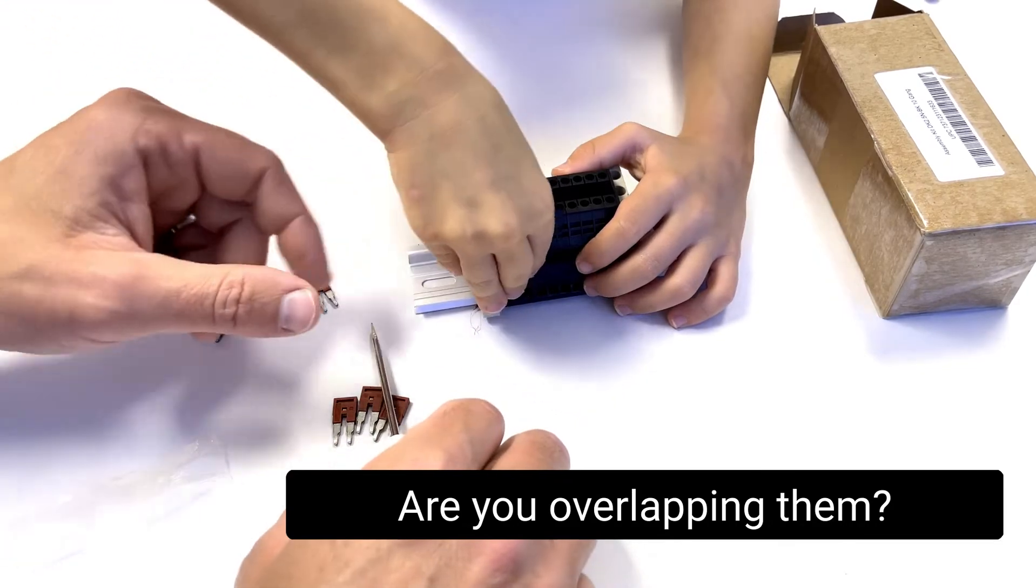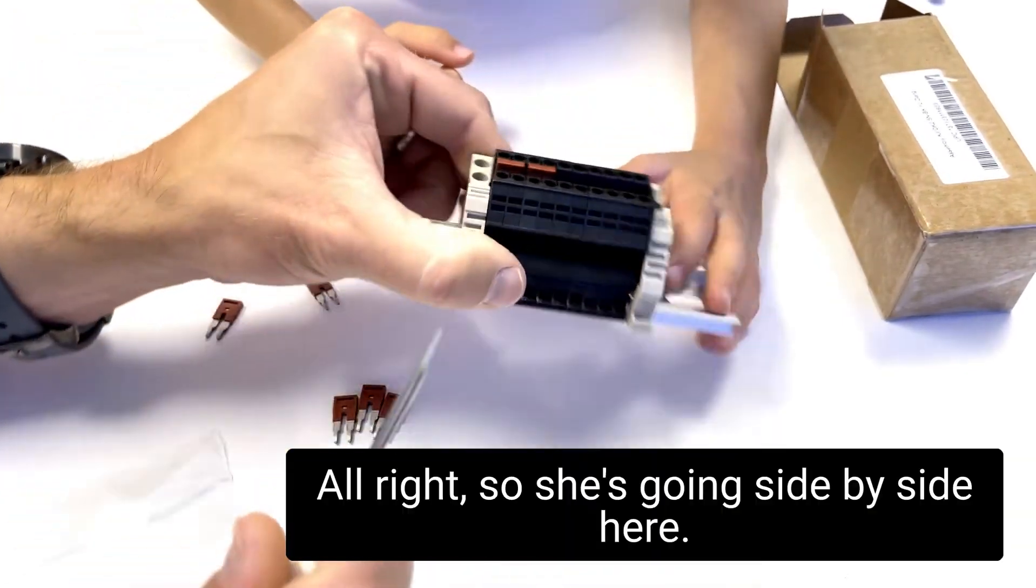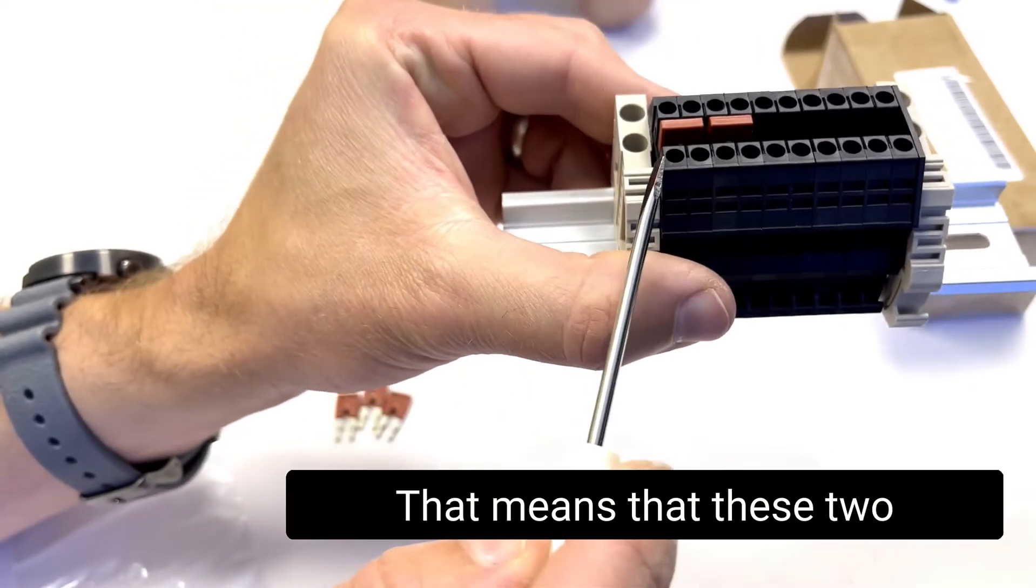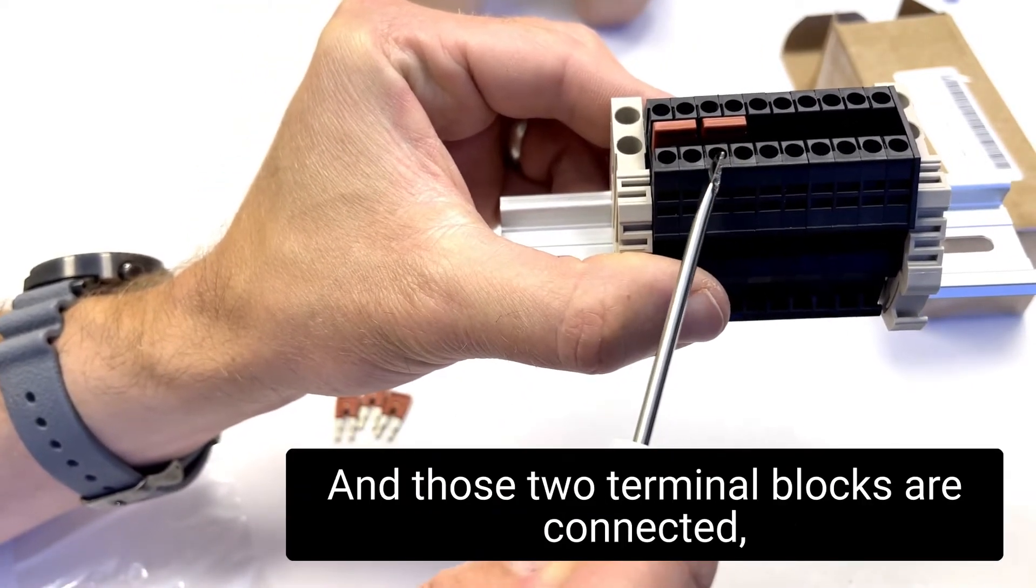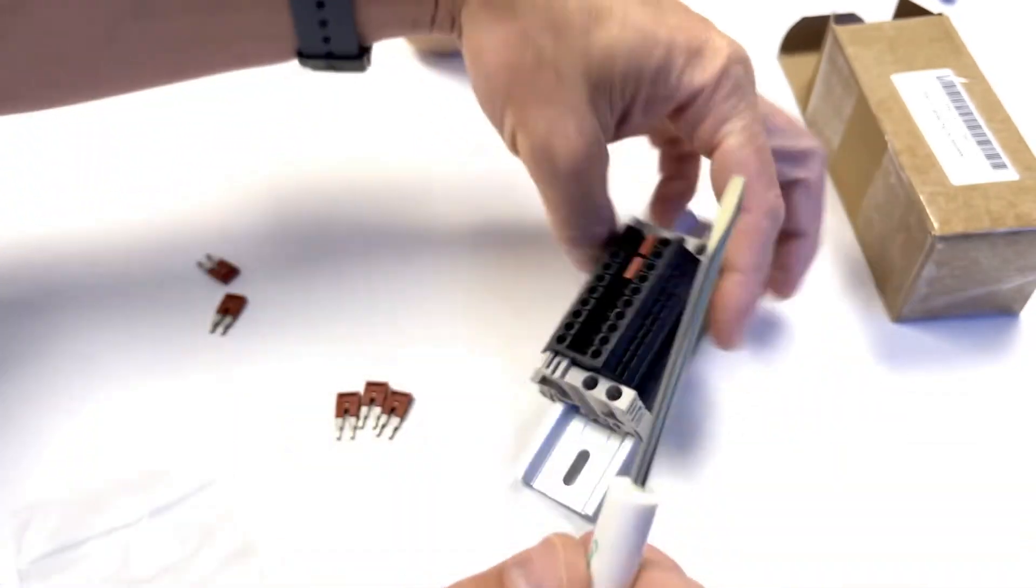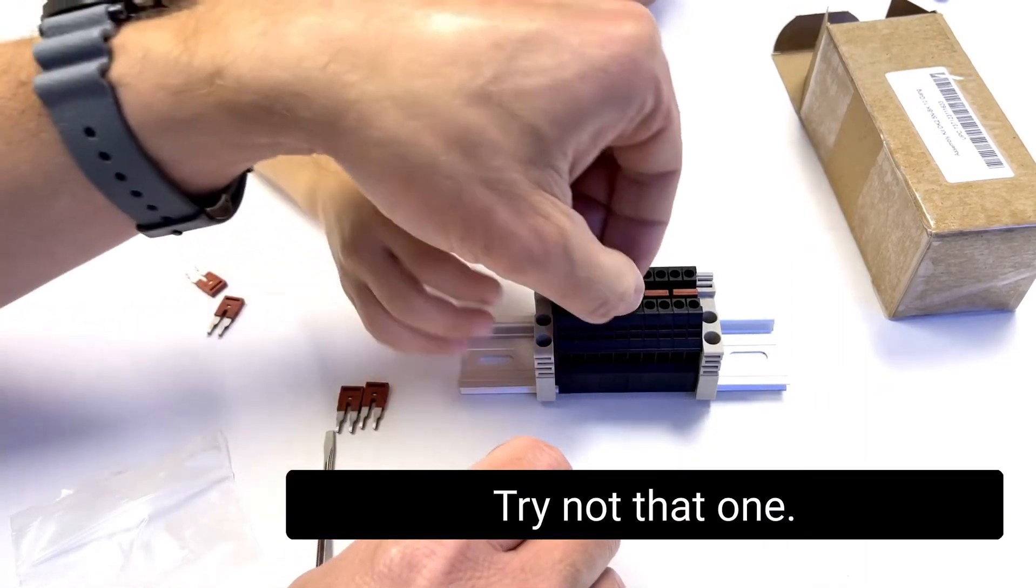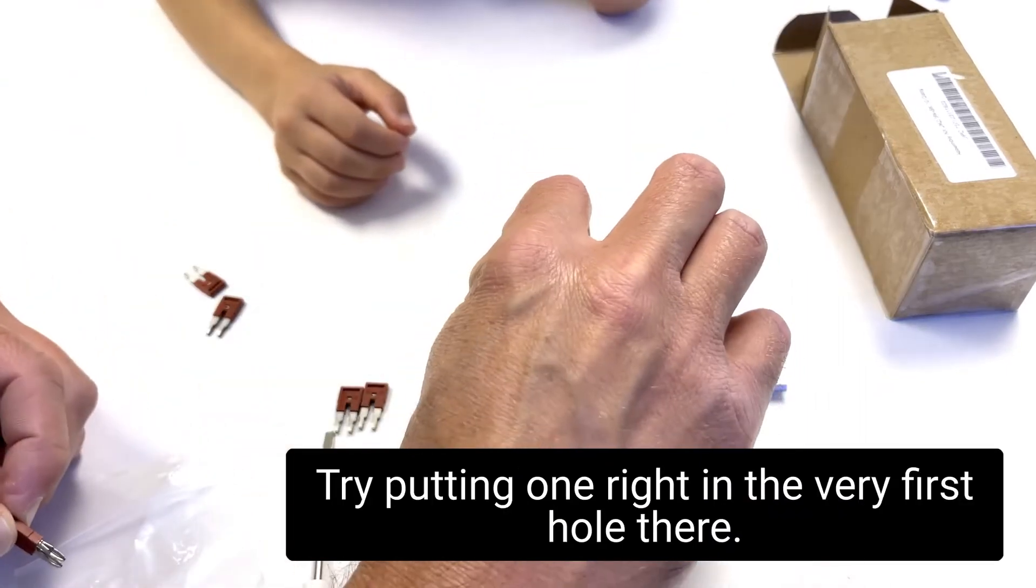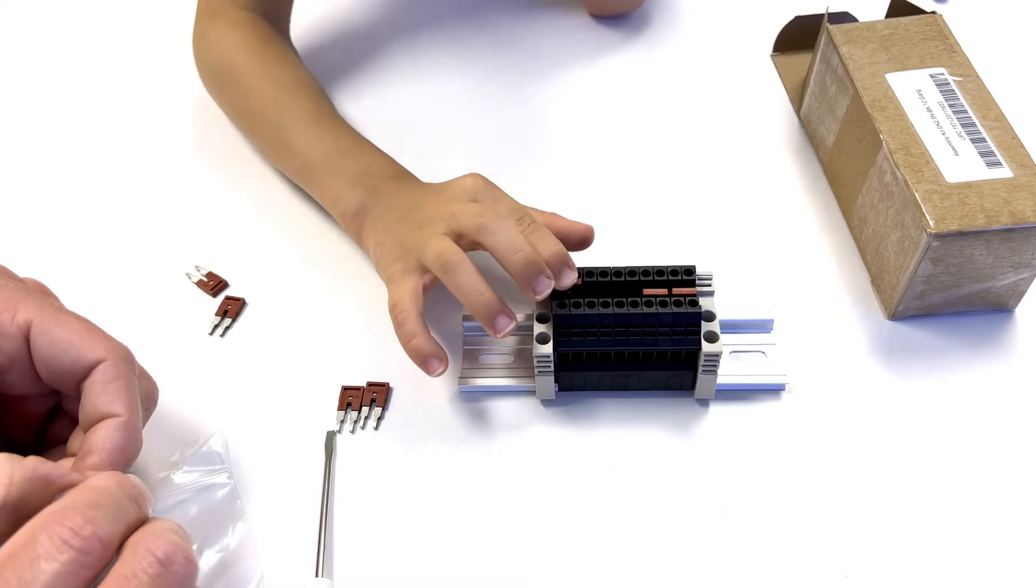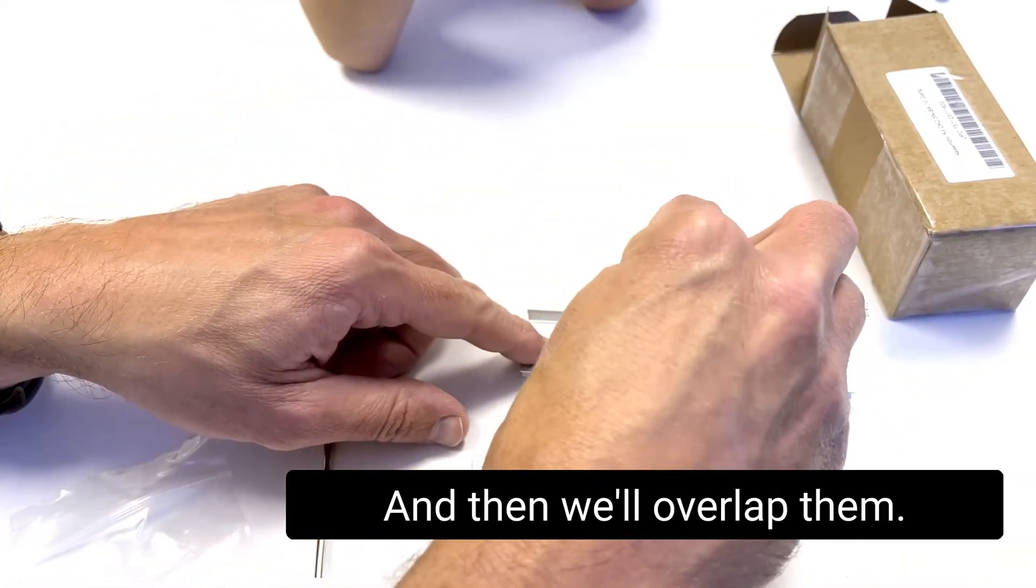Are you overlapping them? No, I'm putting them... Oh, you're not. Okay. You're just putting them side by side. All right. So she's going side by side here. That means that these two terminal blocks are connected and those two terminal blocks are connected. But they're not all connected together. The way that we can connect, let's say, four of them together, put, try, not that one. Try putting one right in the very first hole there. Here, go ahead and give that a push.